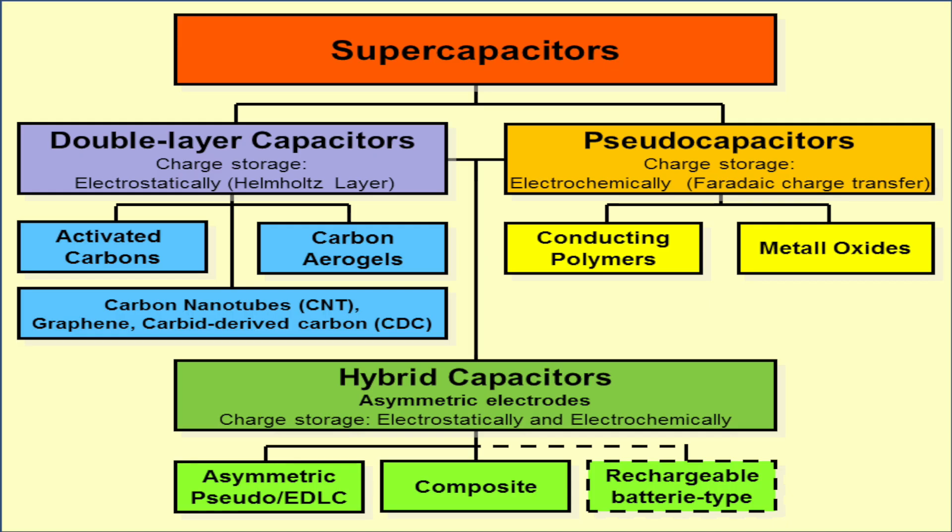This is sort of like the supercapacitor family tree. As you can see, there's lots of variability, but three main groups. For this video, we're only going to be looking at the most standard, which are called electric double layer capacitors.